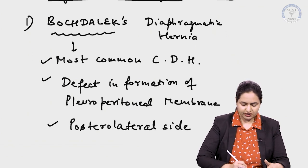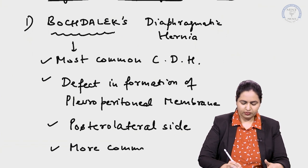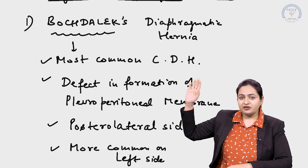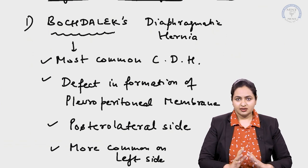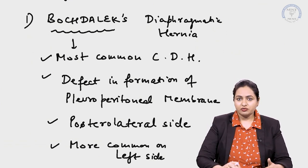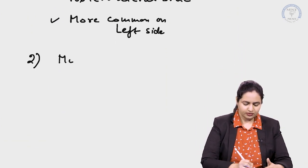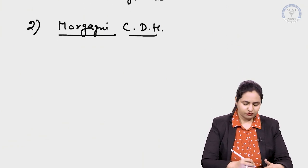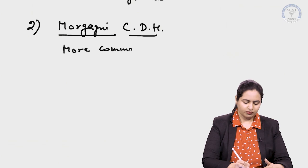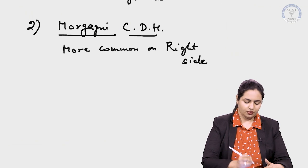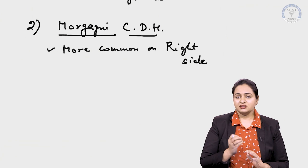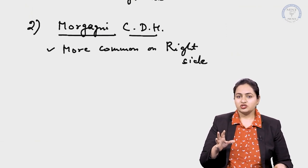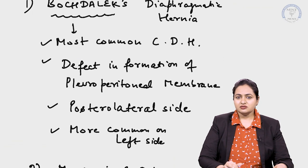The defect is most commonly seen on the posterolateral side and is more common on the left side. Because it is posterolateral, the Bochdalek diaphragmatic hernia is also termed the posterolateral hernia — this is one important type of congenital diaphragmatic hernia. The second type is Morgagni's congenital diaphragmatic hernia, which is more common on the right side, occurring towards the anterior side where the sinus of Morgagni is present.